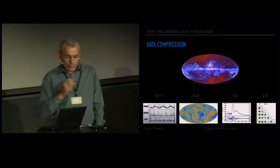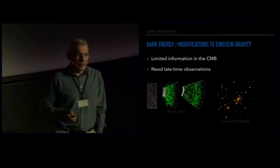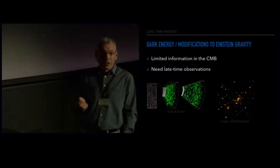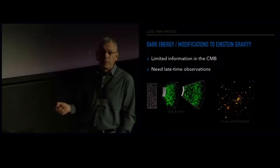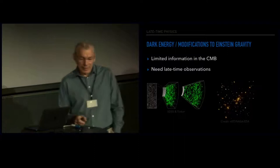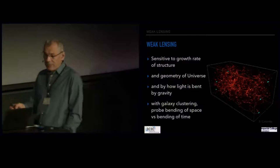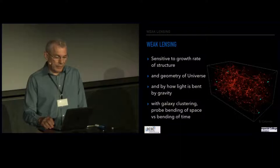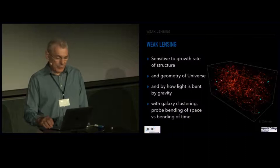If we want to address the science goals that Henk told us about, the CMB contains limited information about dark energy and modified gravity. So we need to look at late-time physics where the situation is much more complicated. The galaxy distribution and the weak lensing distortion patterns are not Gaussian random fields, and that gives us a lot of grief in principle. The reason for using weak lensing is its sensitivity to the growth rate and the geometry of the universe, which can tell you about the gravity model and dark energy properties.